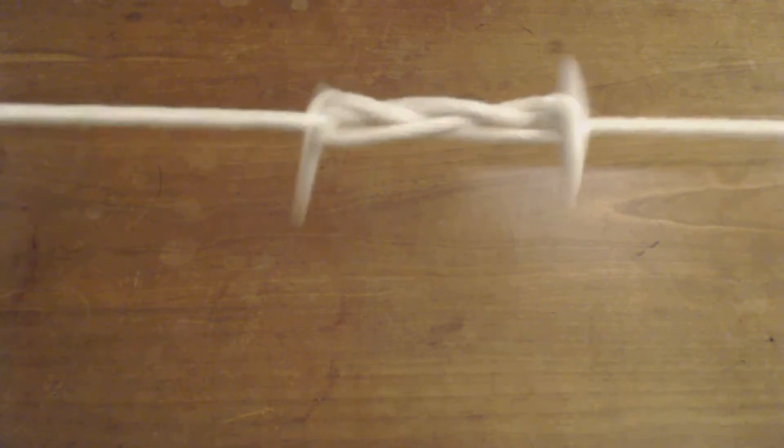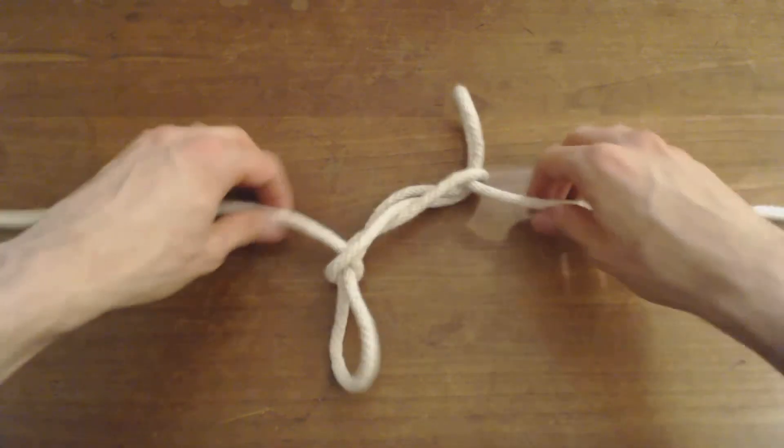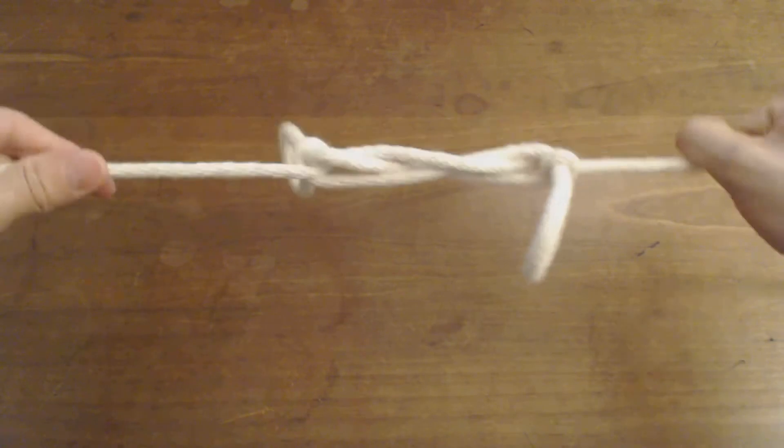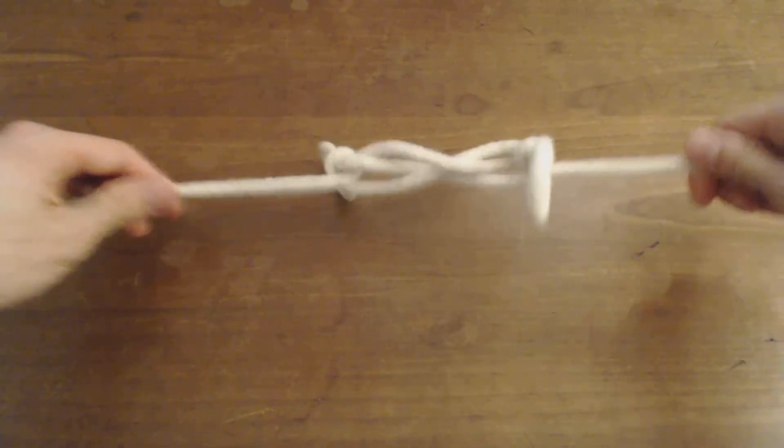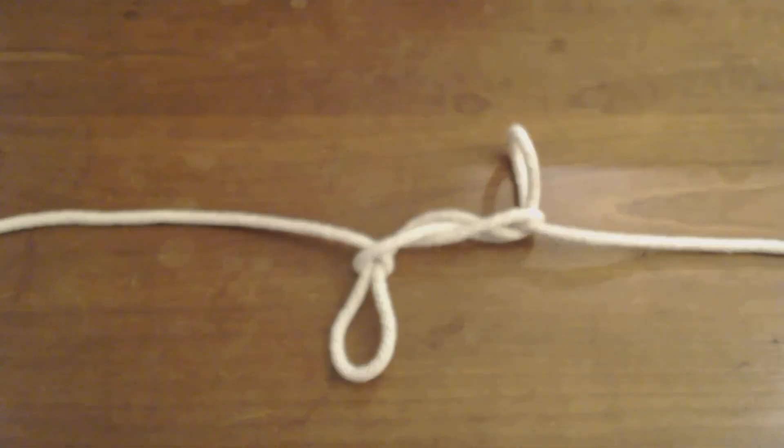Now you can really pull on this knot. It will come undone if you pull too hard, and if you let it go slack, it will come undone as well, but that's how you tie the sheep shank. And you can really shorten the rope that way. Thanks for watching.